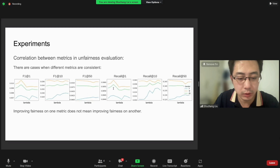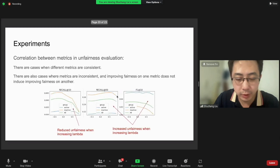In terms of the metric correlations when evaluating the unfairness, we have consistent cases where the loss-based unfairness also controls all other metrics. But there are also inconsistent cases where different metrics are different. In this case, for example, we observe increasing fairness on recall at 10 but decreasing fairness on F1 at 10, so this indicates a potential trade-off between these two metrics.